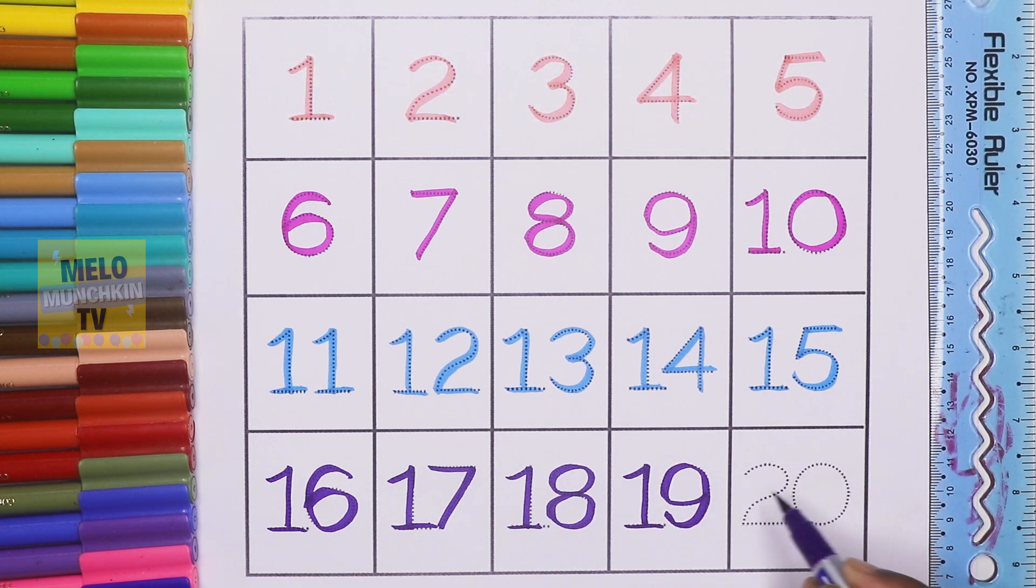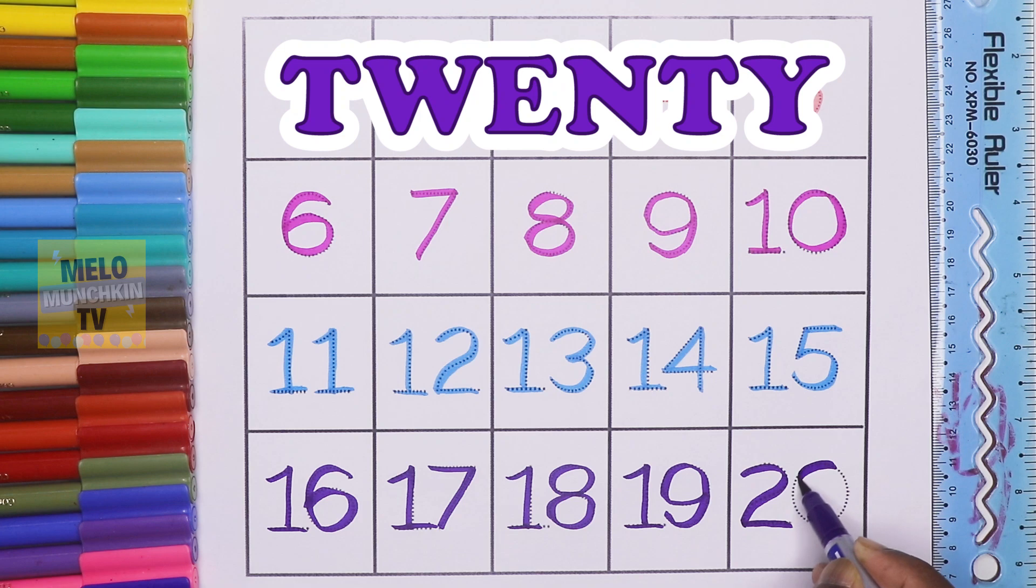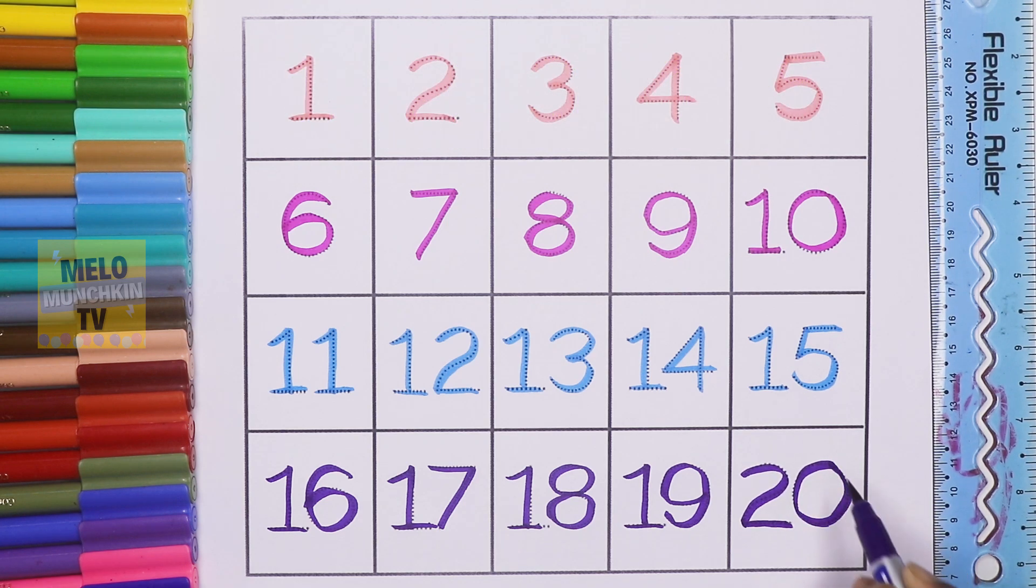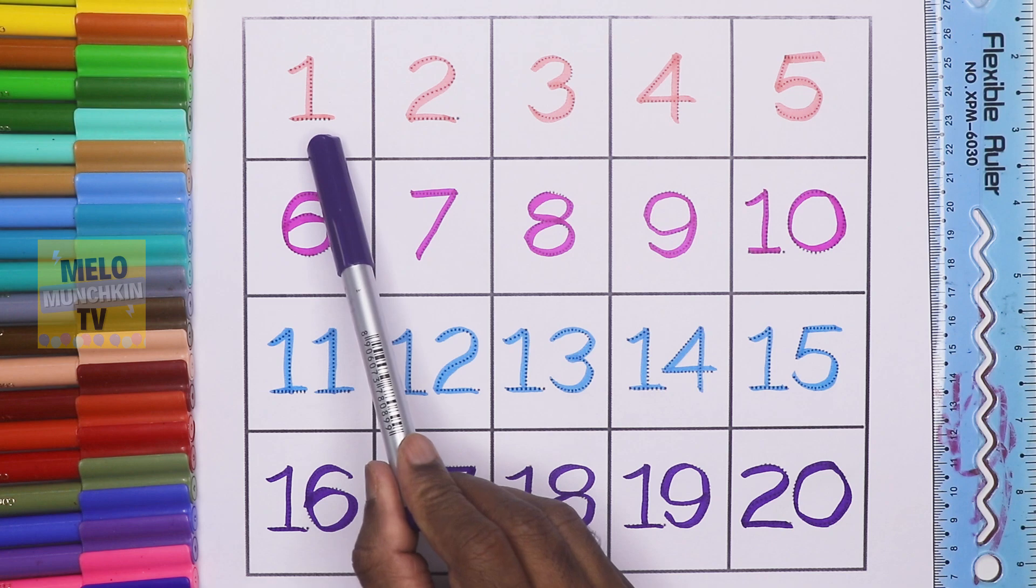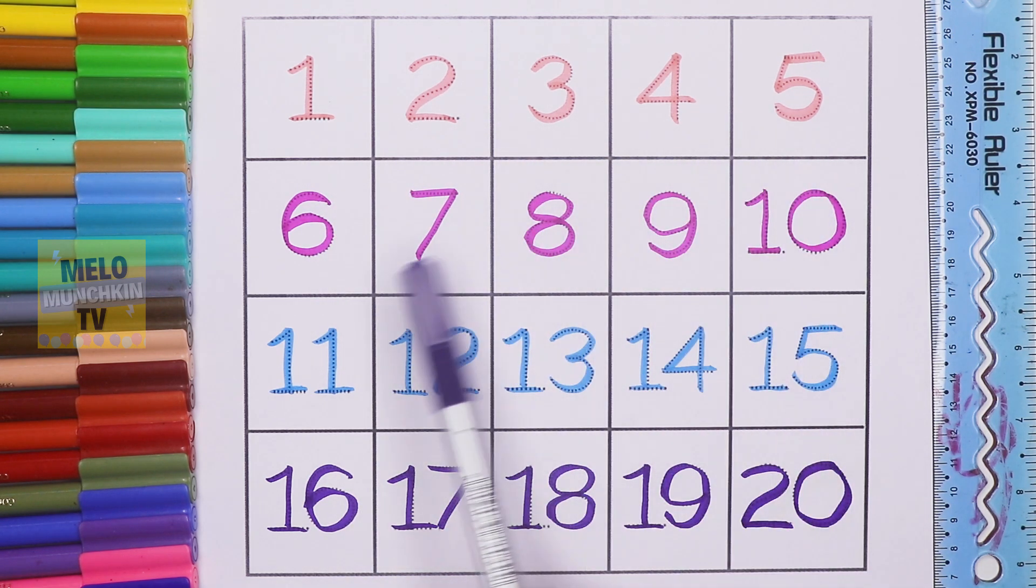Twenty, T-W-E-N-T-Y, 20. So let's repeat once again. This is 1, 2, 3, 4, 5, 6,